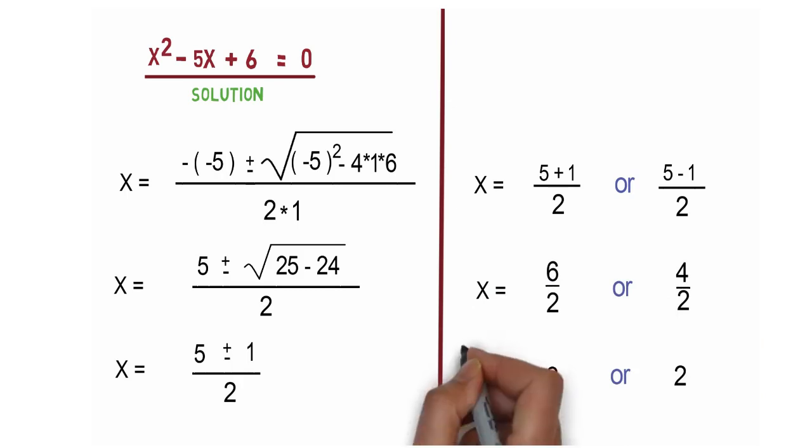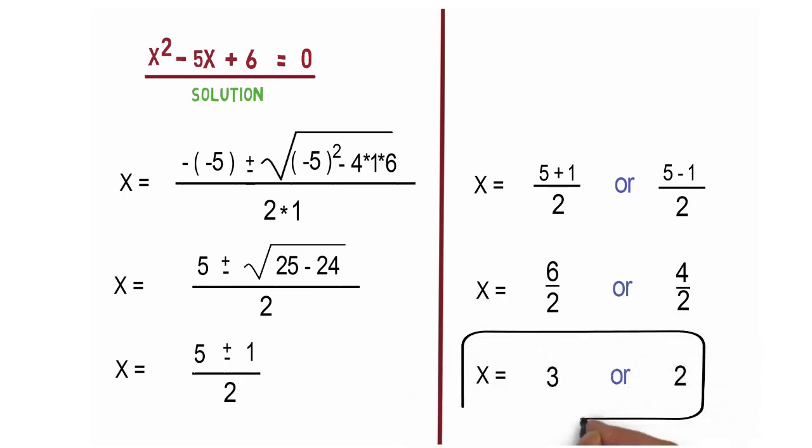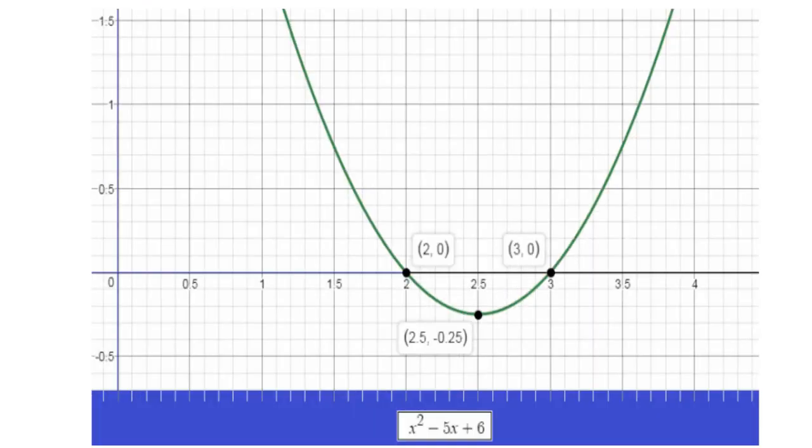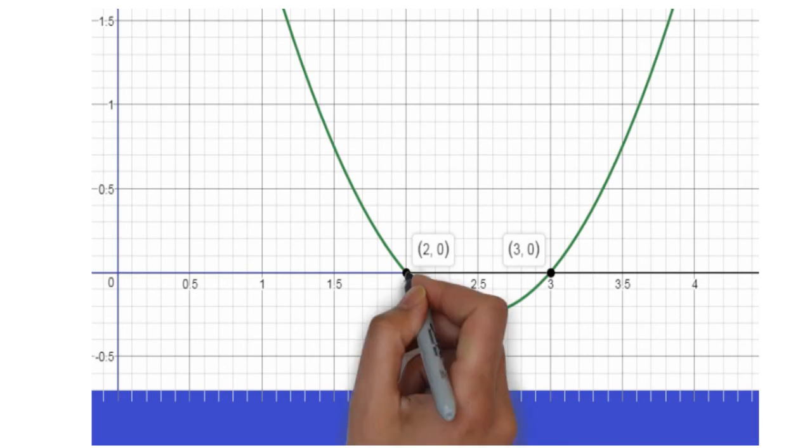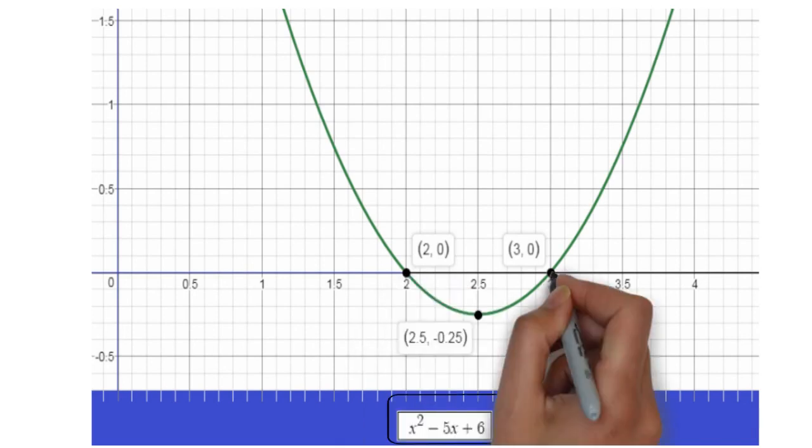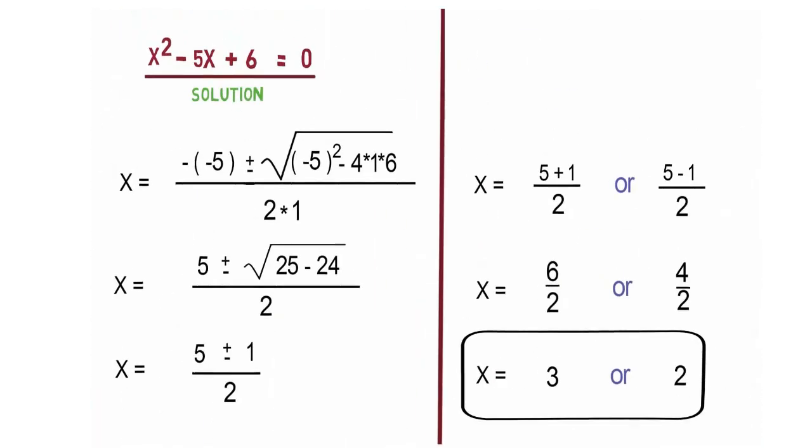But remember, x cannot be equal to both 3 and 2 simultaneously. This is what we got in the graphical representation as well. x² - 5x + 6 = 0 was the quadratic equation, and the points we figured out were 2 and 3. That means the answer we got from the formula-based approach is absolutely correct.